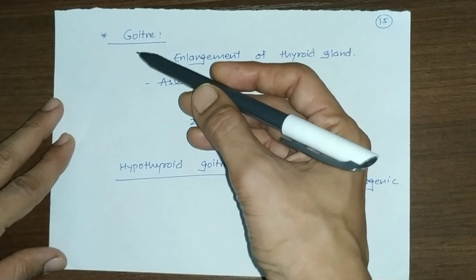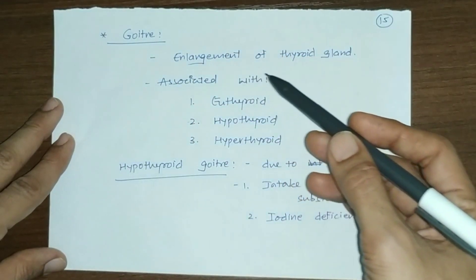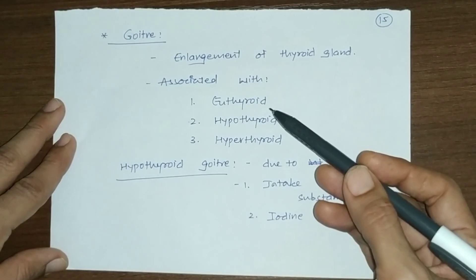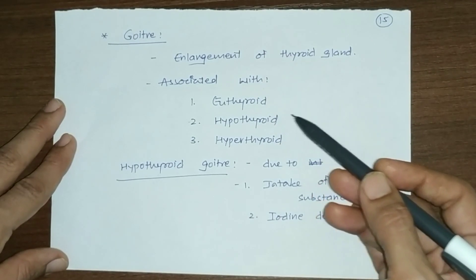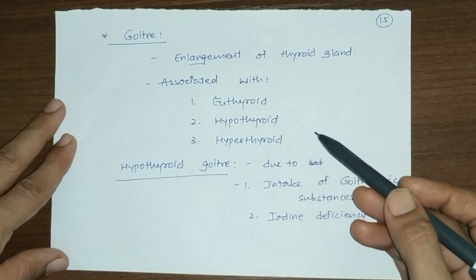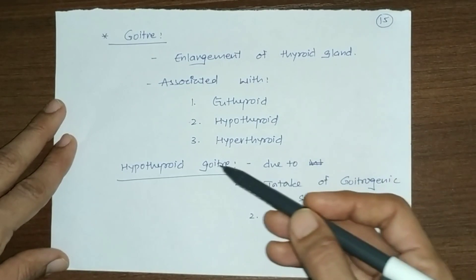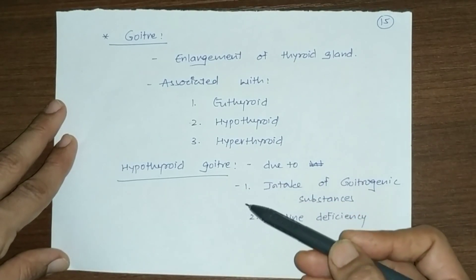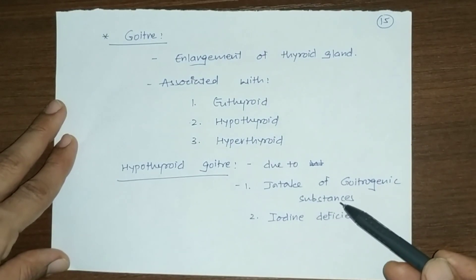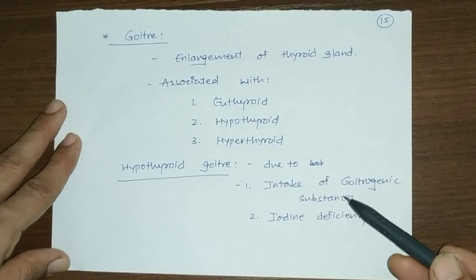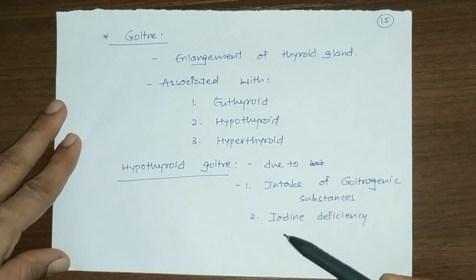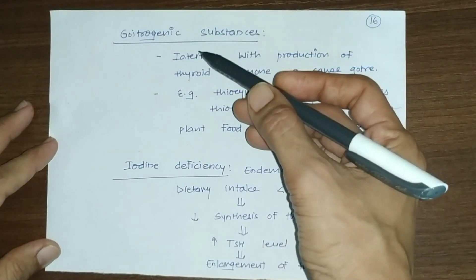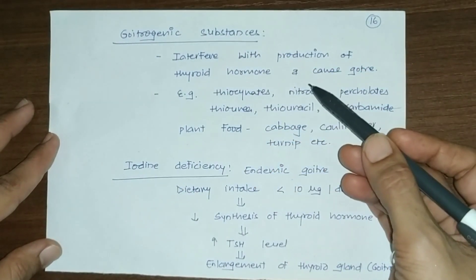Goiter simply means enlargement of the thyroid gland. Goiter is associated with either euthyroid state (normal thyroid hormone level), hypothyroid state, or hyperthyroid state. Hypothyroidism with goiter can be due to intake of goitrogenic substances or iodine deficiency in the diet. Goitrogenic substances are those that interfere with the production of thyroid hormones and cause goiter.